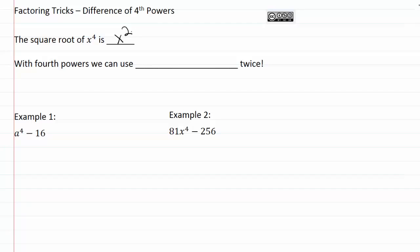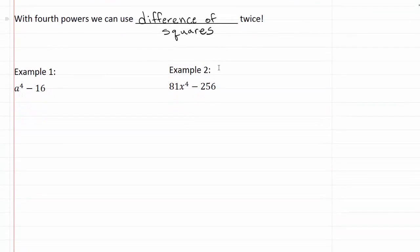With fourth powers we can use difference of squares twice, so in order to factor we're going to have to take two steps. We're really just going to use what we did before with difference of squares and build on top of that.